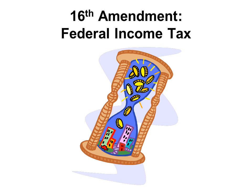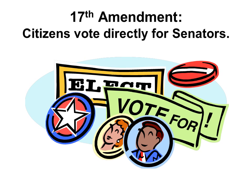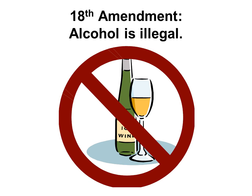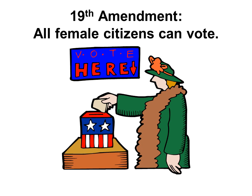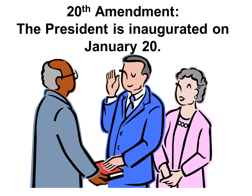The sixteenth amendment talks about the federal income tax. The seventeenth amendment talks about how citizens can vote directly for their senators. The eighteenth amendment makes alcohol illegal. The nineteenth amendment guaranteed that all female citizens can vote. The twentieth amendment changed the date when the president can be inaugurated. The president is inaugurated around January 20th.